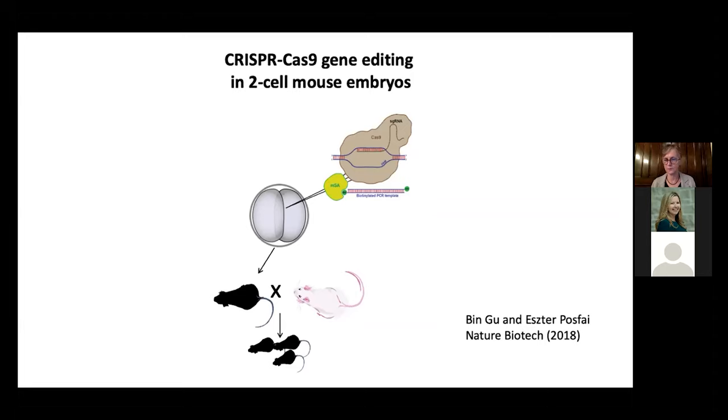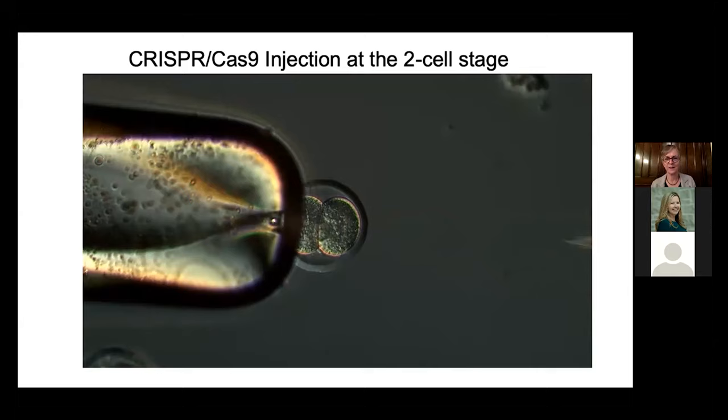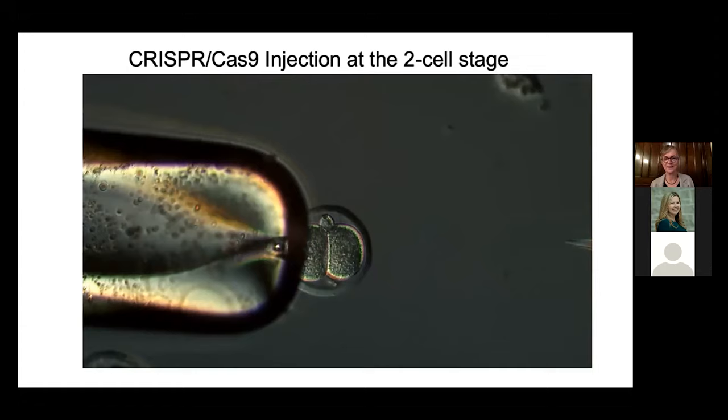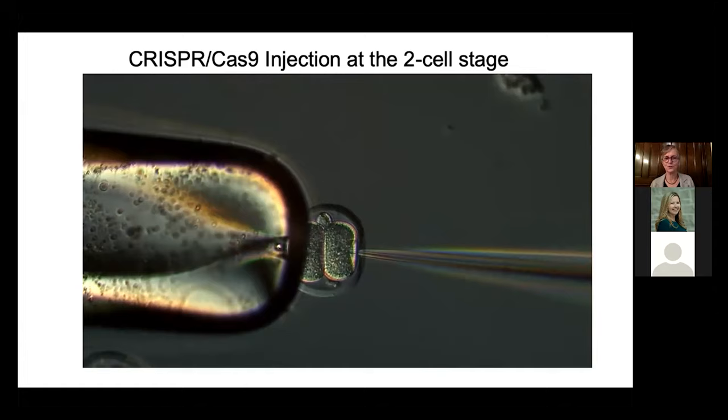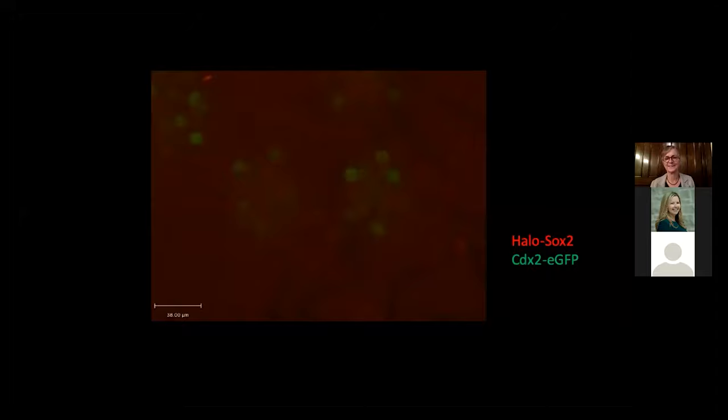This has been shared with people around the world. People often ask how the two-cell injection is done: you inject one cell, then spin it around and inject the other cell. Some say it's too difficult and ask why not inject just one blastomere — but if you inject both, you double your chances of getting the insertion you want.